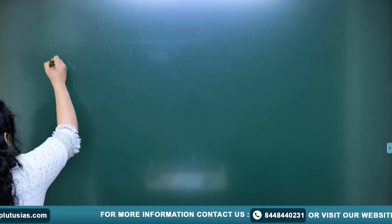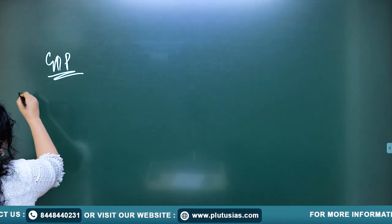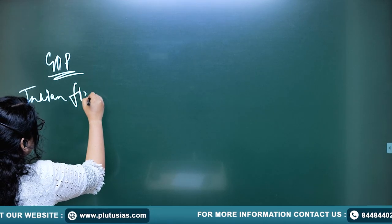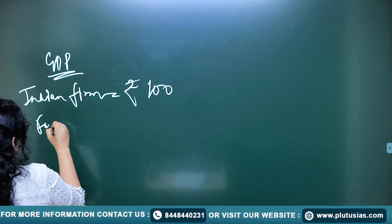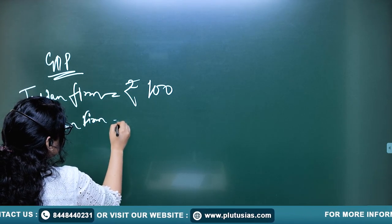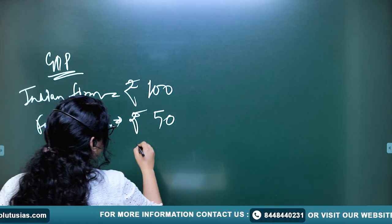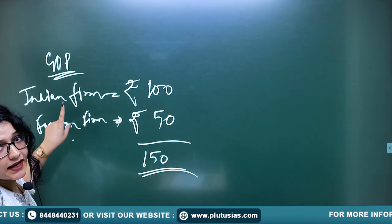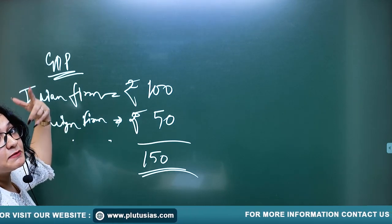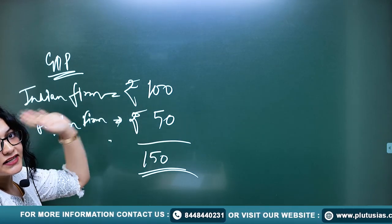Besides GDP, there are other terms to know. For example, if we calculate GDP — production that happened within a country — let's say an Indian firm produces goods worth 100 rupees, and a foreign firm operating locally produces goods worth 50 rupees, then our GDP would be 150 rupees. It doesn't matter which country the firm belongs to; if production happens in India, it's calculated in GDP. But when we calculate GNP, we exclude the foreign country's production.